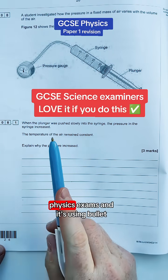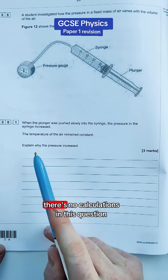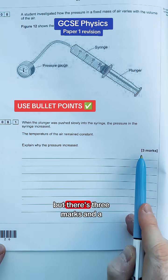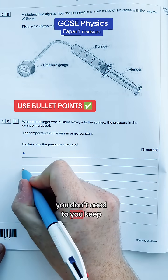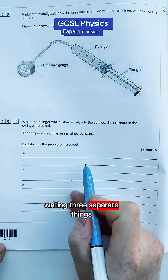This tip will really help you in GCSE physics exams and it's using bullet points. There's no calculations in this question but there's three marks and a lot of people are tempted to waffle and write loads. You don't need to. Keep it concise - you get your three marks by writing three separate things.